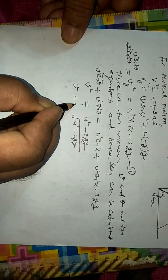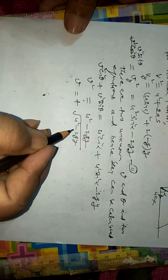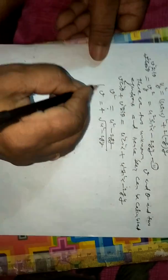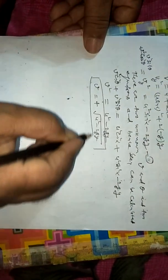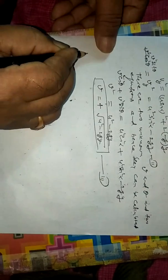This will always be positive, because speed cannot be negative. This is the magnitude of velocity.